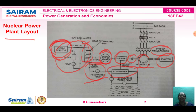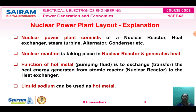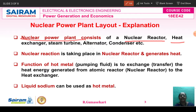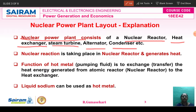Now we will study in detail what are the components used in the nuclear power plant layout. The nuclear power plant layout consists of: nuclear reactor, heat exchanger, steam turbine, alternator, and condenser — six components in total.